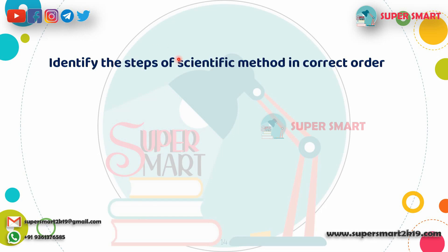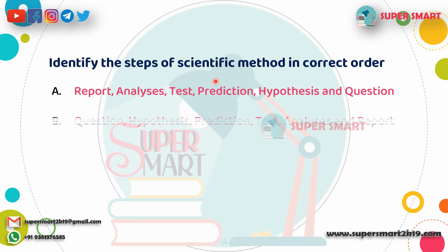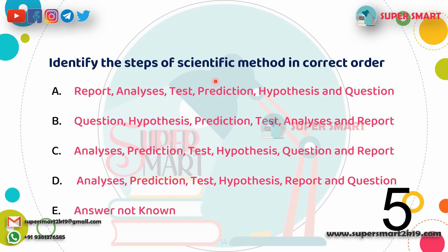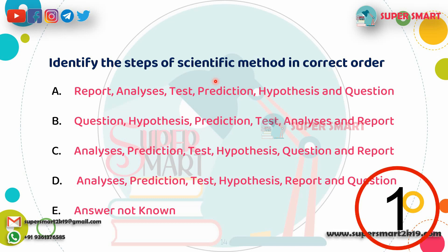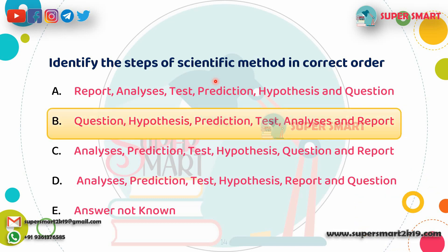Next question: In the scientific method, what is the correct order of steps? The correct order is: hypothesis, predict, test, analyze, and report.